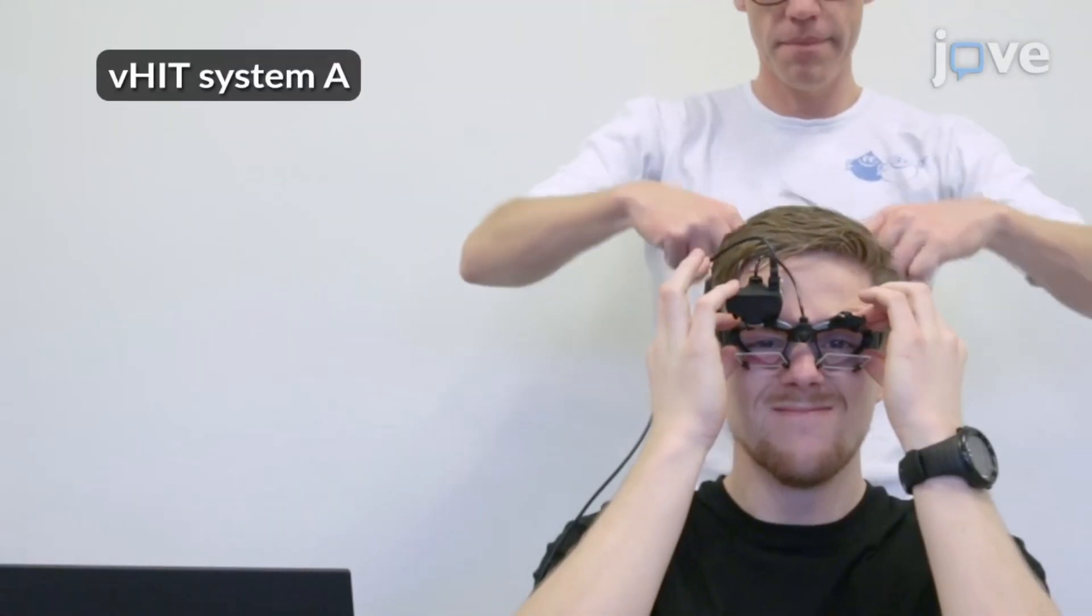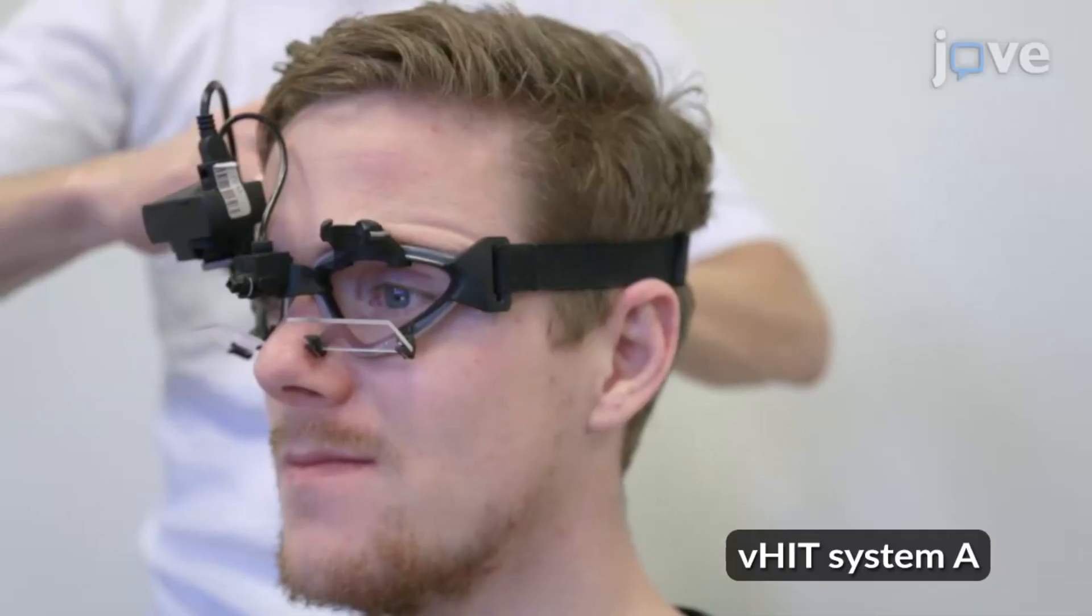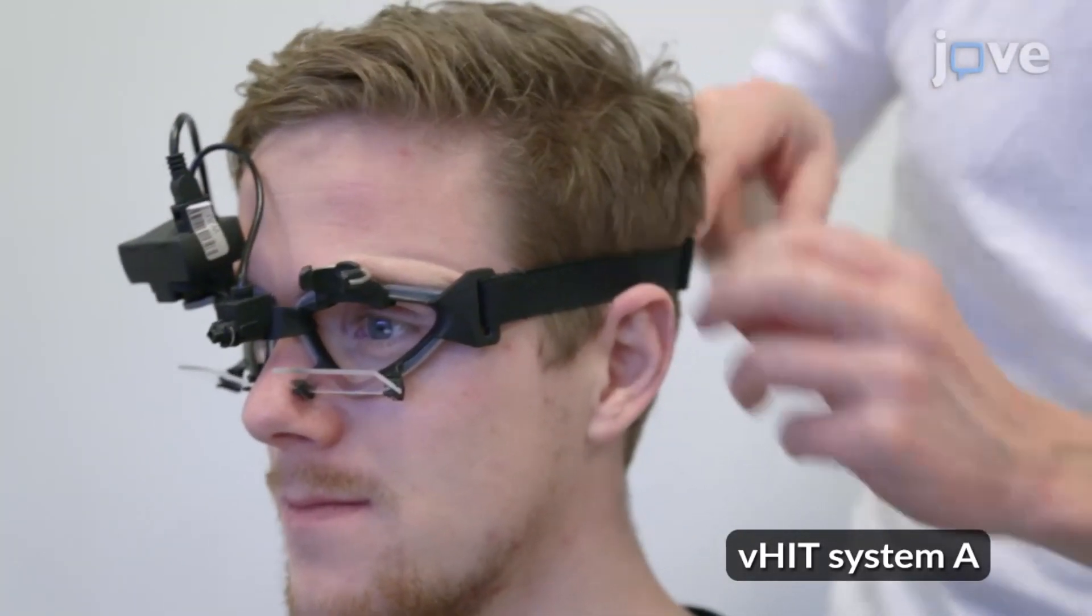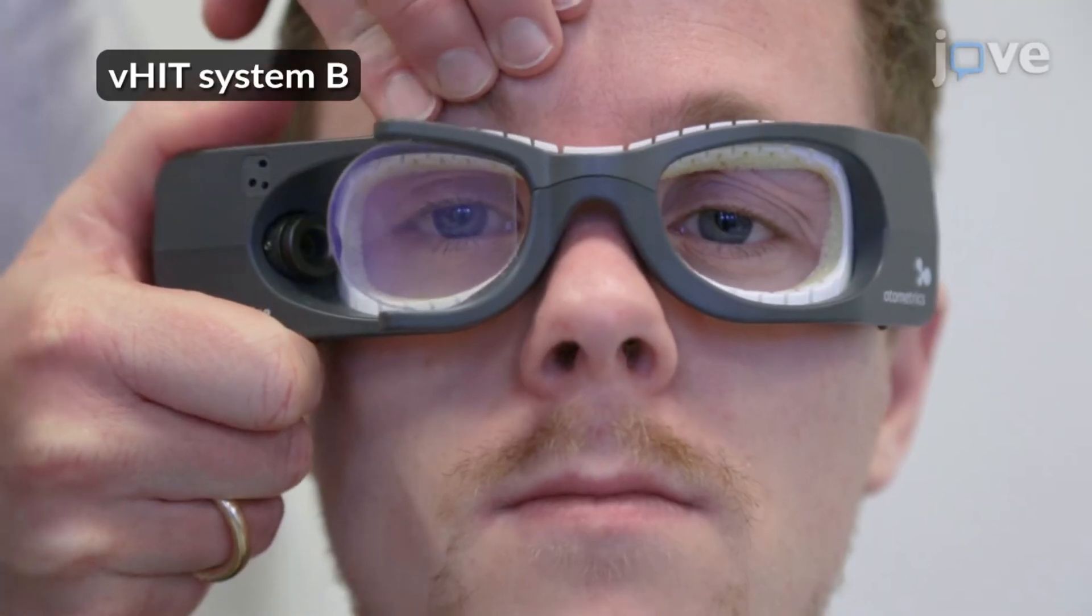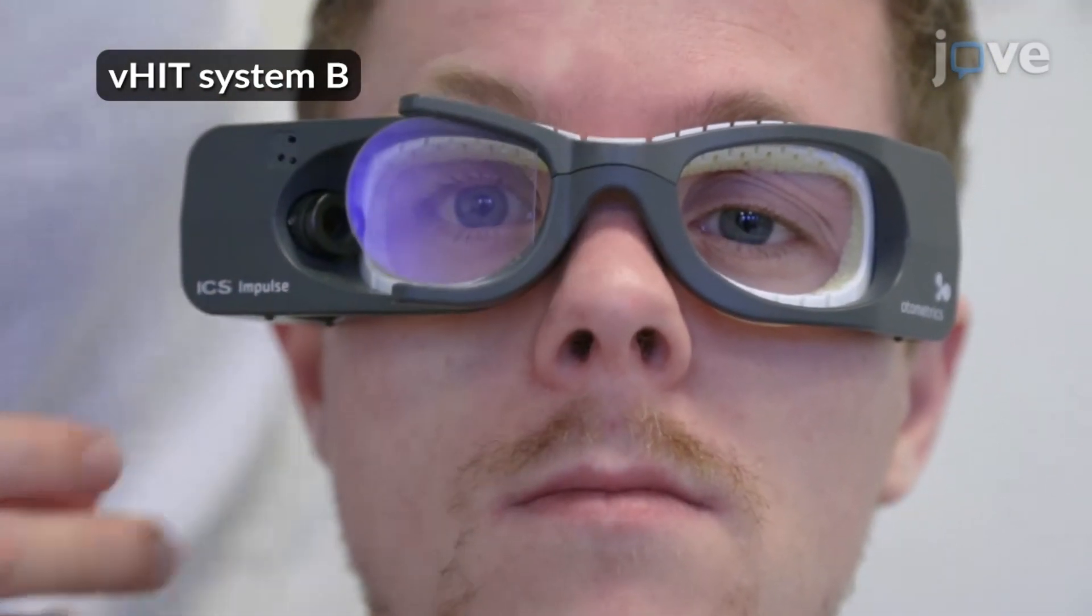Provide goggles and adjust them on the participant's head. Tighten the strap firmly to ensure that goggles will not shift during application of head impulses. Ensure that the eyes are wide open, with eyelids in a position where they do not interfere with pupil detection.